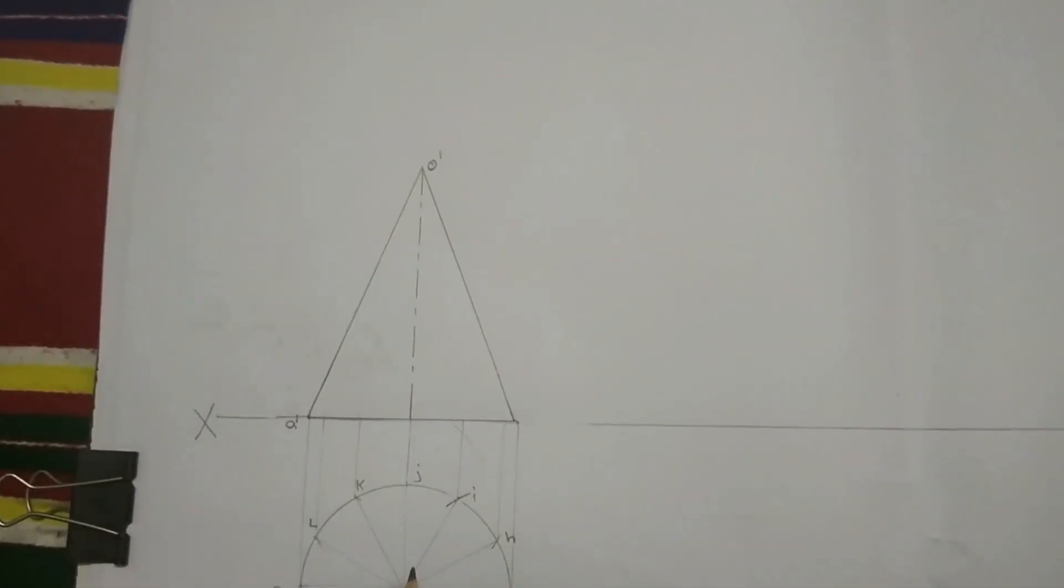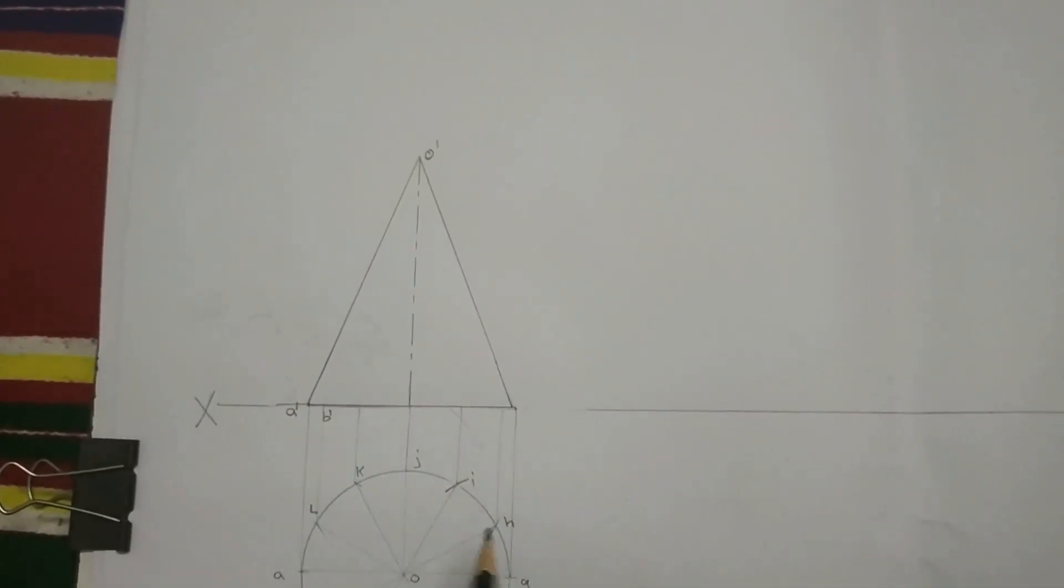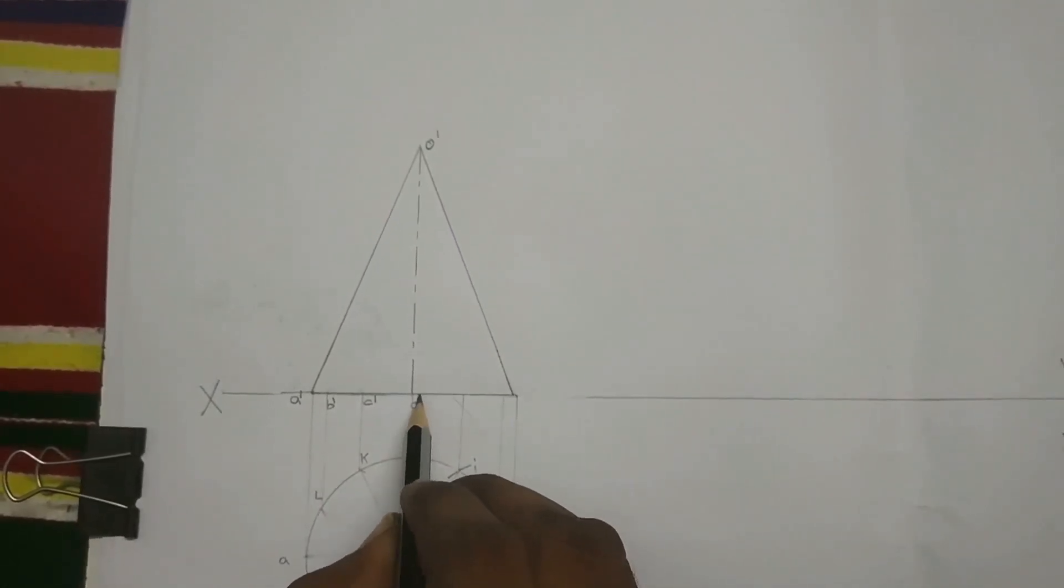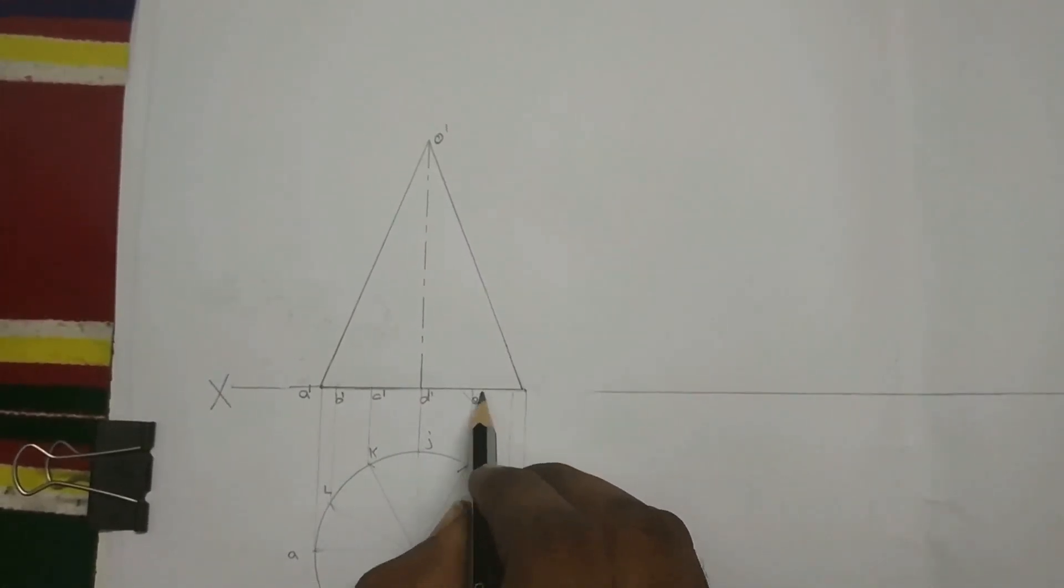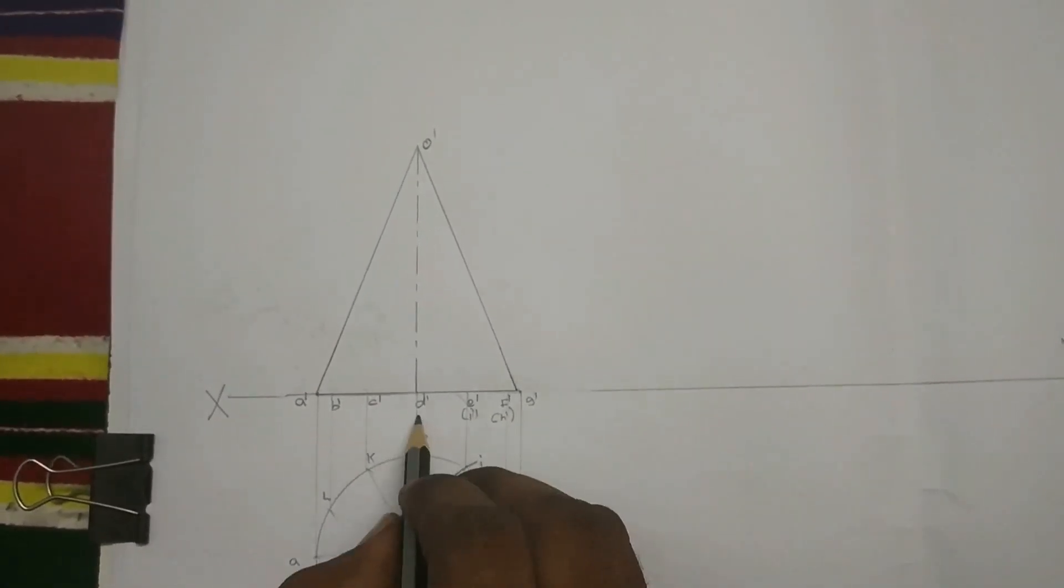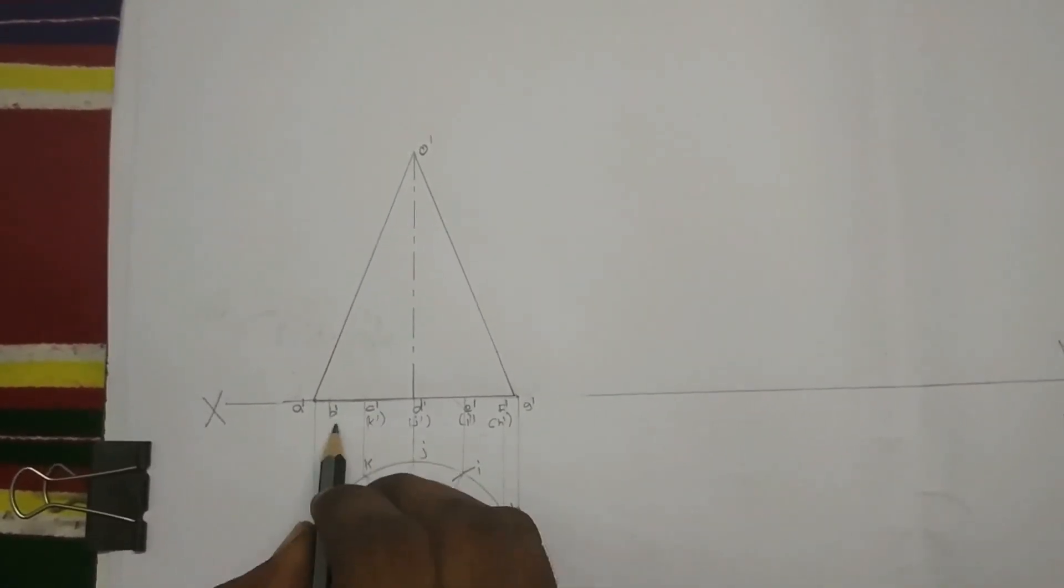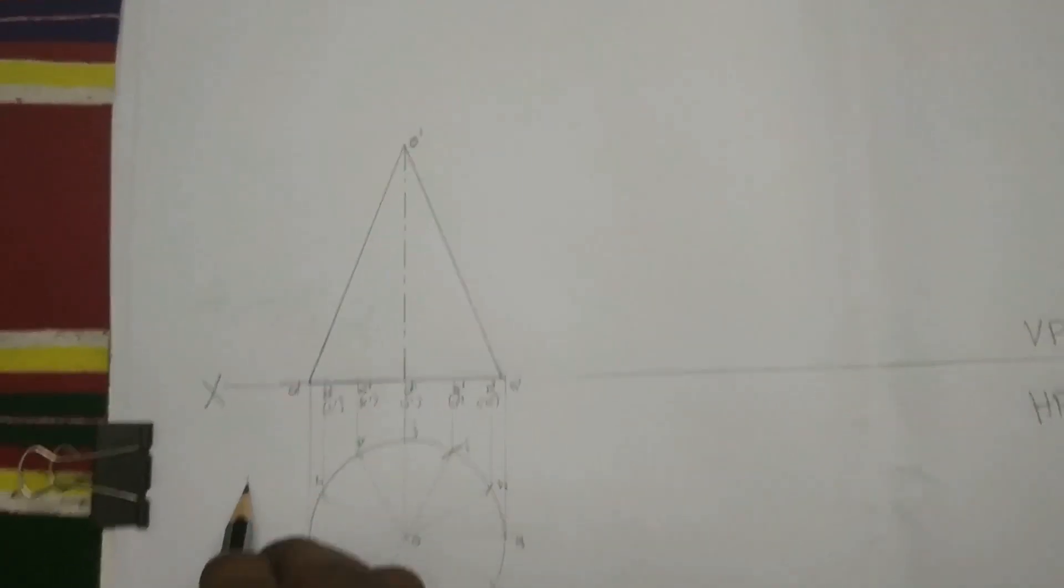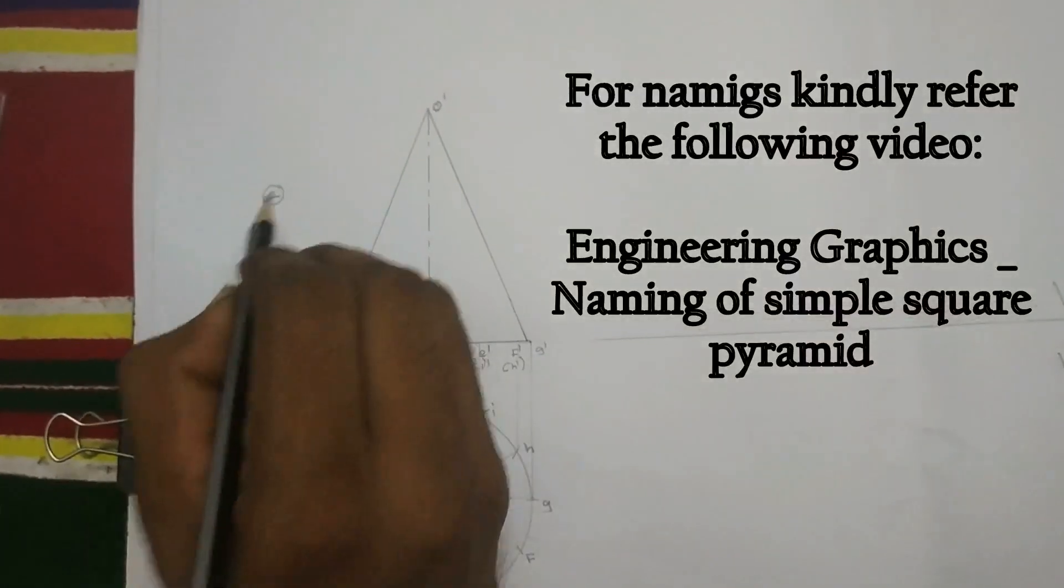Write the namings. A dash, B dash, C dash, D dash, E dash, F dash, G dash is a visible one. And H dash, I dash, J dash, K dash, L dash is a hidden one. And the apex point is O dash. That is a visible one.